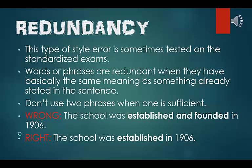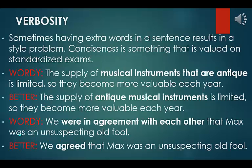Redundancy. Words or phrases are redundant when they have basically the same meaning as something already stated in the sentence. Don't use two phrases when one is sufficient. Wrong: the school was established and founded in 1906. Right: the school was established in 1906. Verbosity. Sometimes having extra words in a sentence results in a style problem. Conciseness is valued on standardized exams. Wordy: the supply of musical instruments that are antique is limited, so they become more valuable each year. Better: the supply of antique musical instruments is limited, so they become more valuable each year. Wordy: we were in agreement with each other that Max was an unsuspecting old fool. Better: we agreed that Max was an unsuspecting old fool.